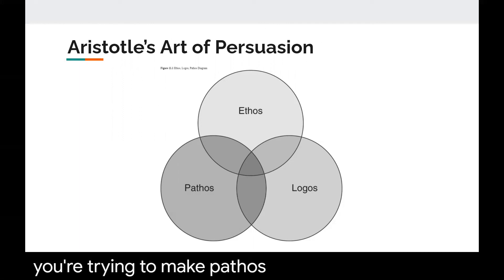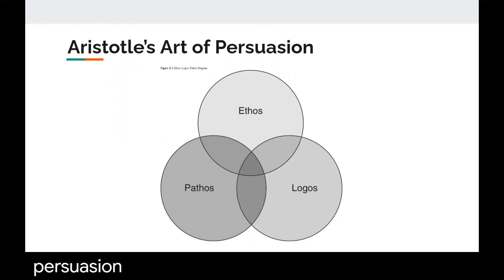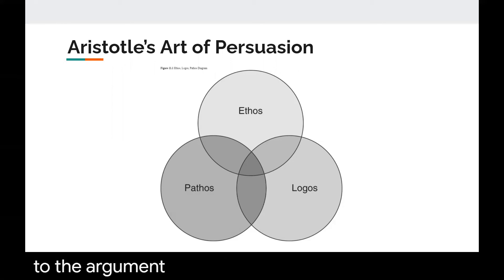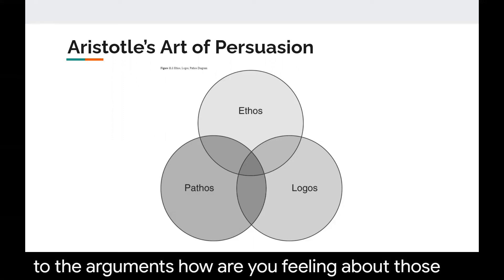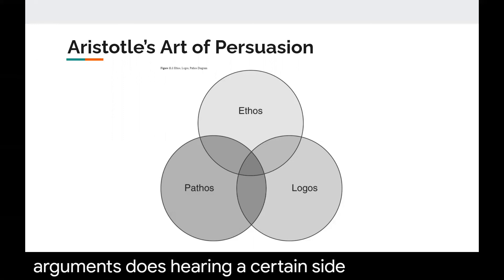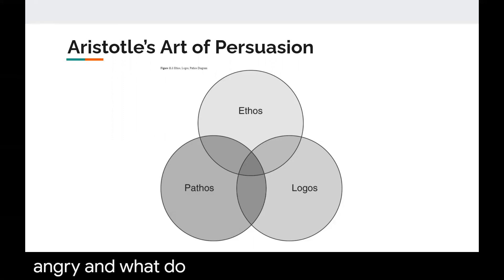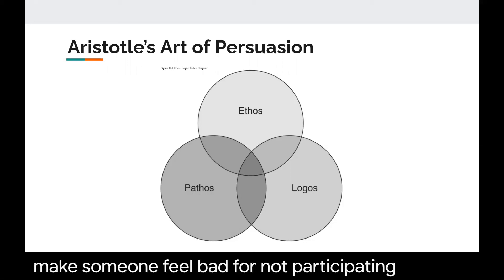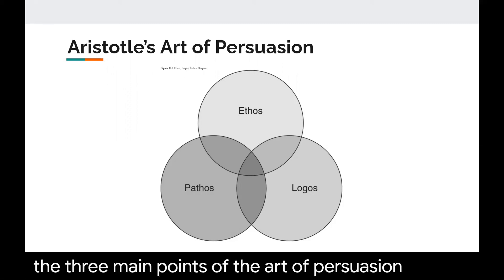Pathos in the art of persuasion is really dealing with the emotional aspects of persuasion. How are you drawn to the arguments? How are you feeling about those arguments? Does hearing a certain side make you very angry? And what do you do with that anger? Can you make someone feel bad for not participating? So that's the three main points of the art of persuasion.